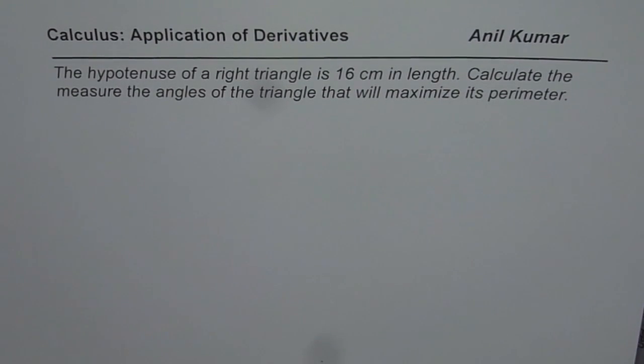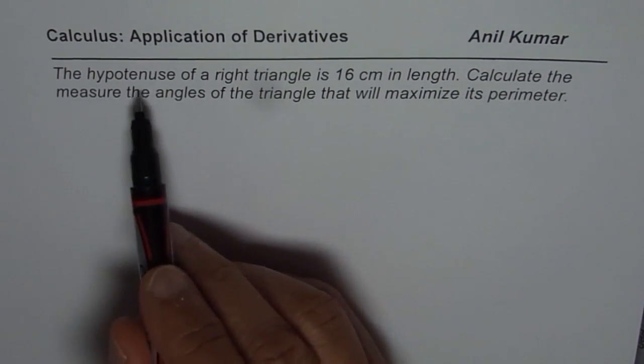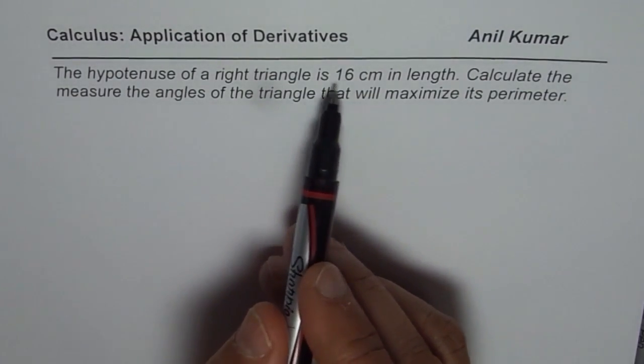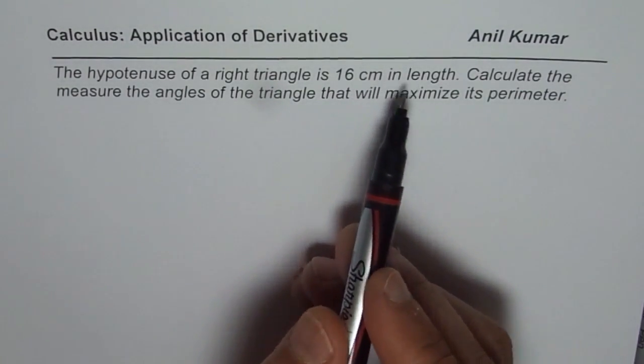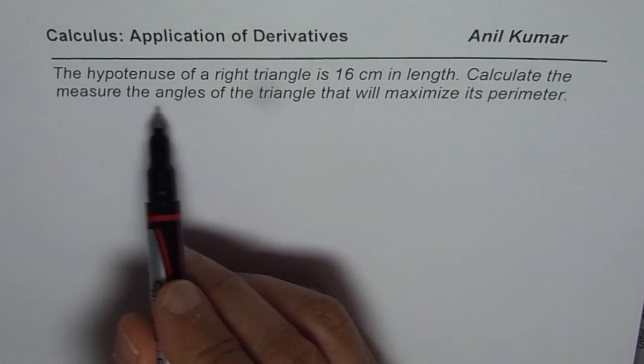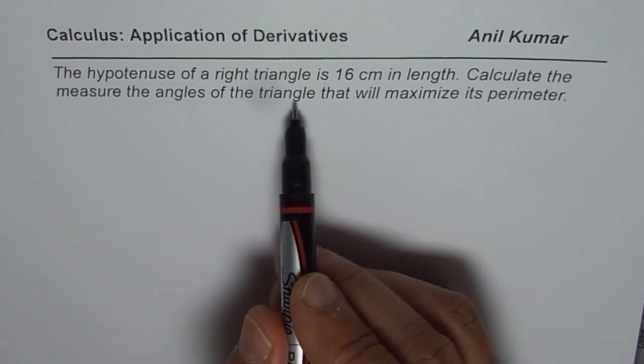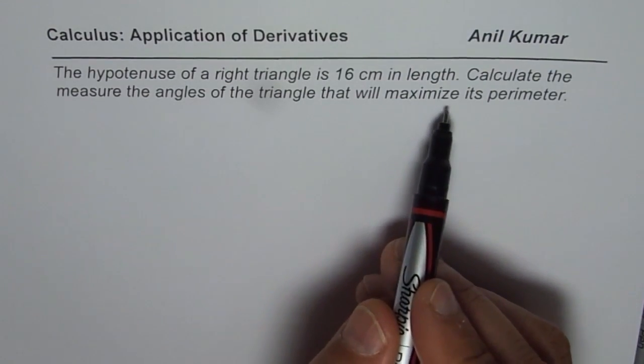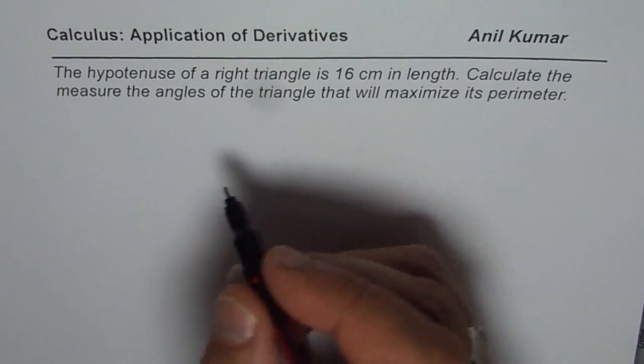I'm Anil Kumar and now let us explore a few applications of derivatives. The question here is, the hypotenuse of a right triangle is 16 cm in length.